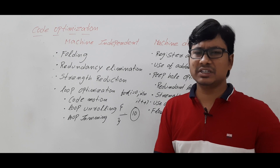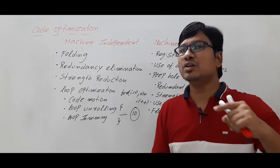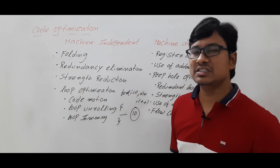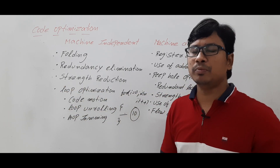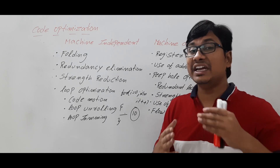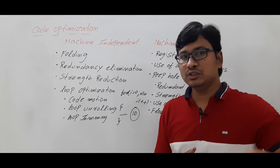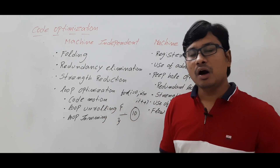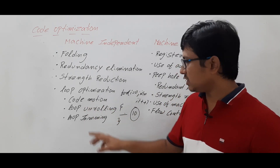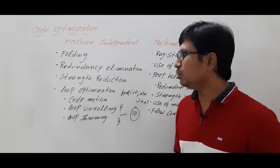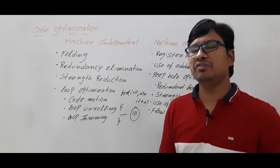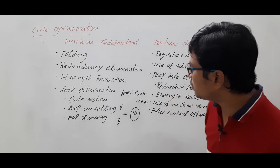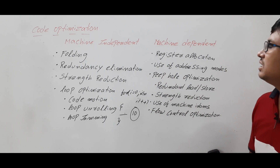When we represent a loop in three-address code, we usually have goto statements, but not all goto statements create a loop — that point you should remember. So first, to perform loop optimization you must know how to identify a loop in three-address code. In the next video I will discuss how to identify a loop from three-address code.